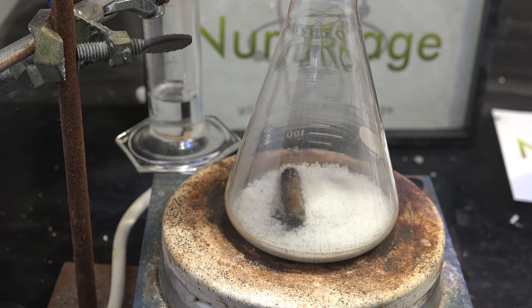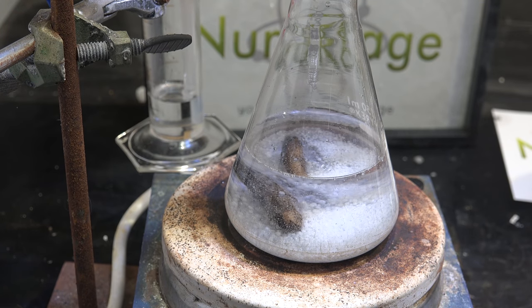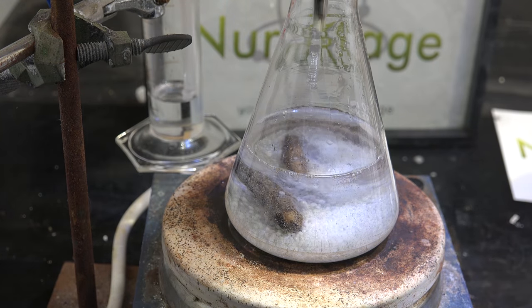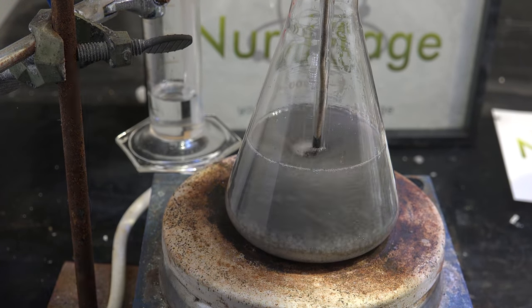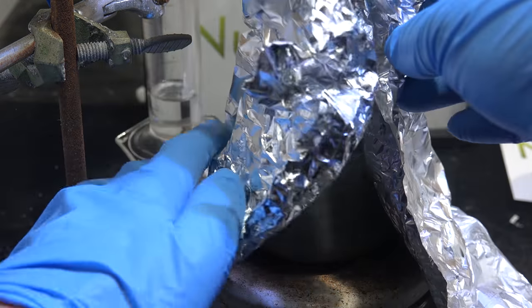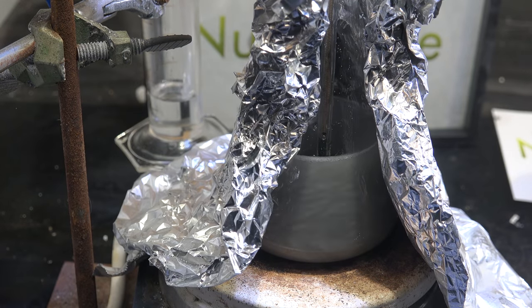So I set up another run using the same flask but this time ramp the temperature to 200 celsius over the course of 8 hours. This time I didn't put in magnesium since we already know we can make sodium even with aluminum present. So to save time I'm just going to focus on the aluminum drying.